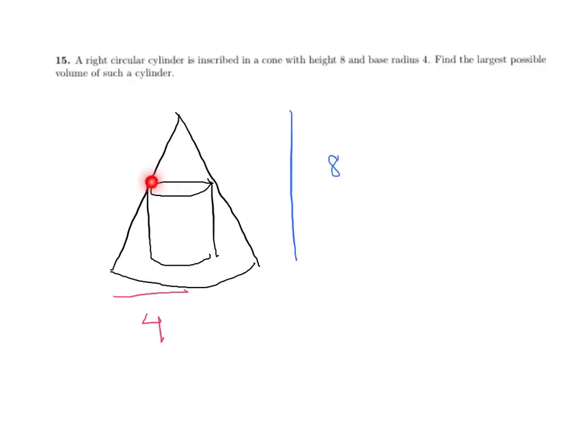We have a right circular cylinder inside a cone of height 8 and base radius 4. We have to figure out the largest possible volume of such a cylinder.